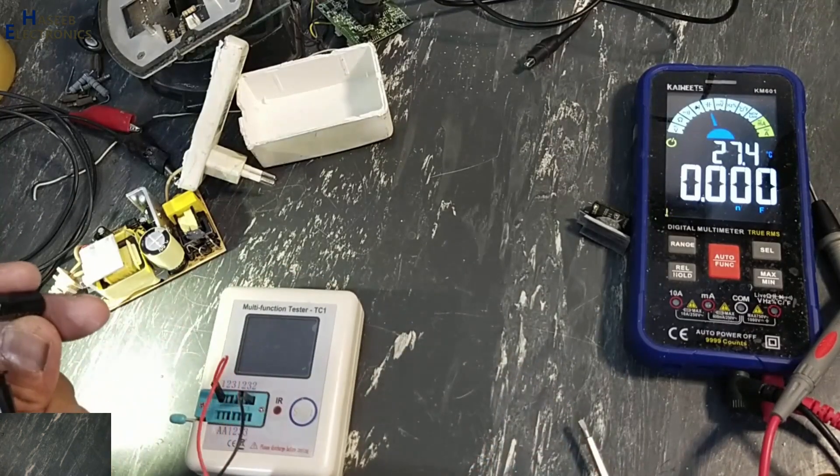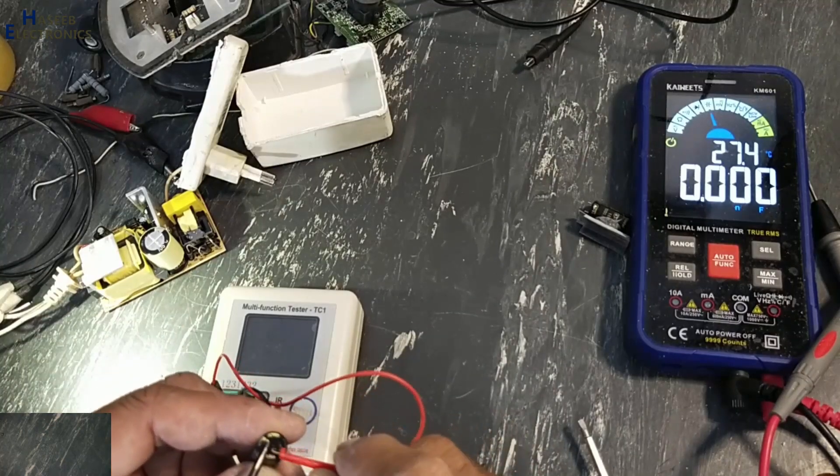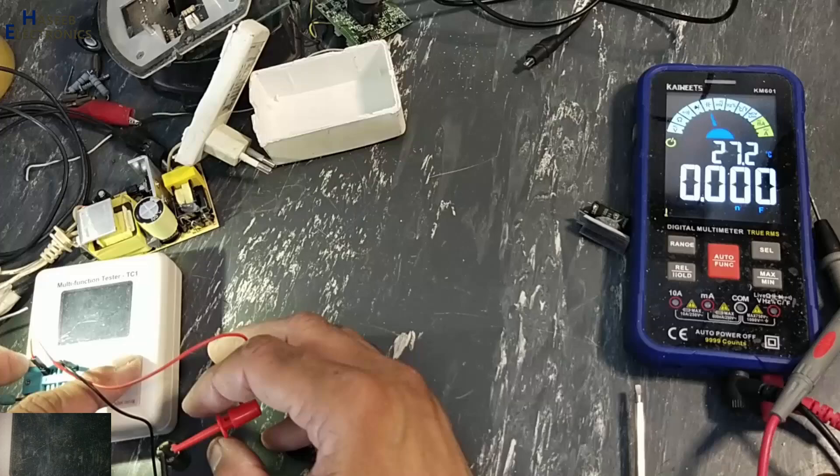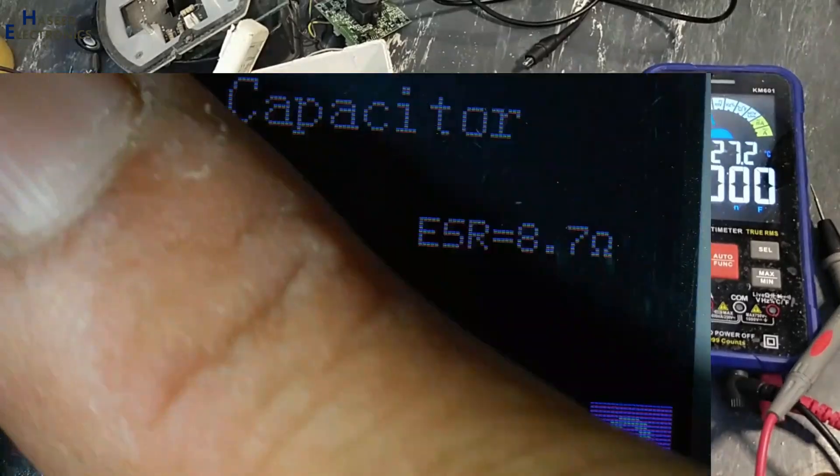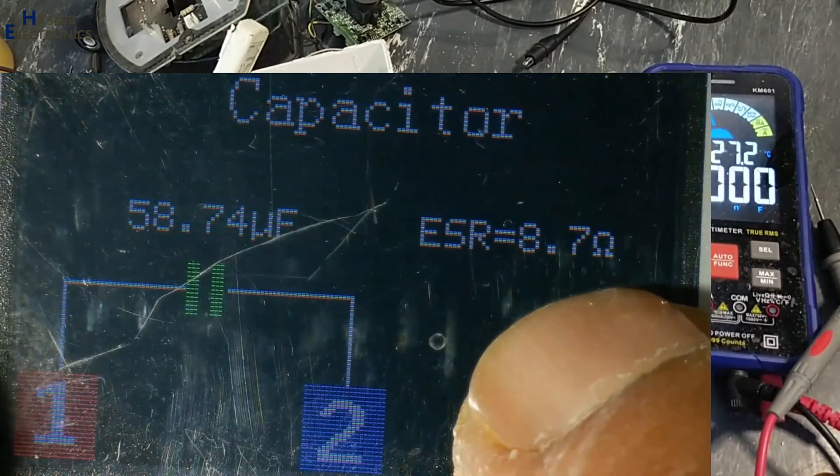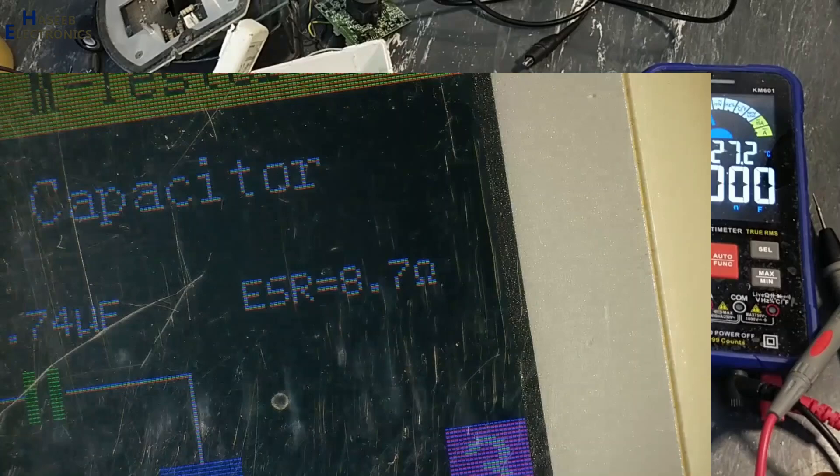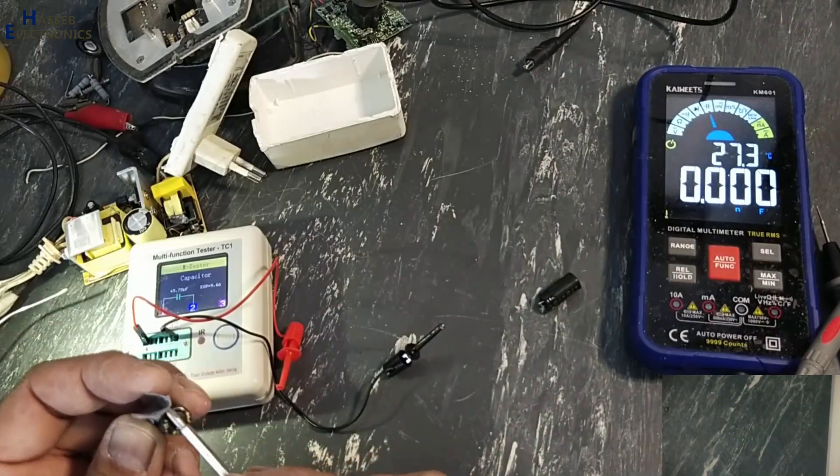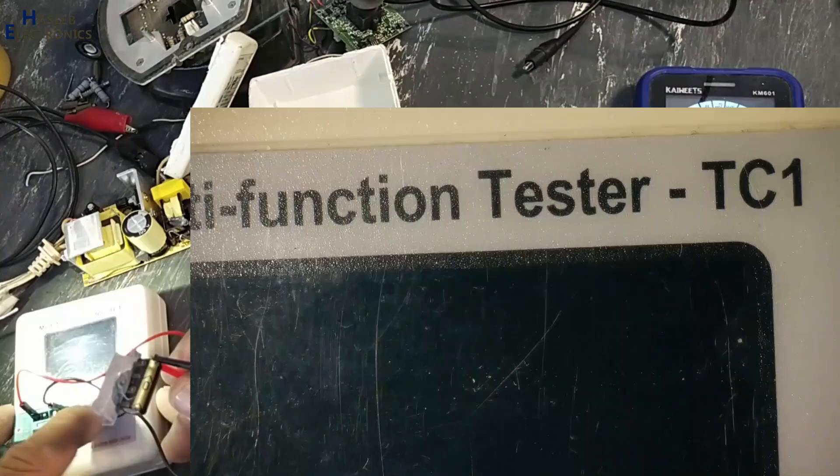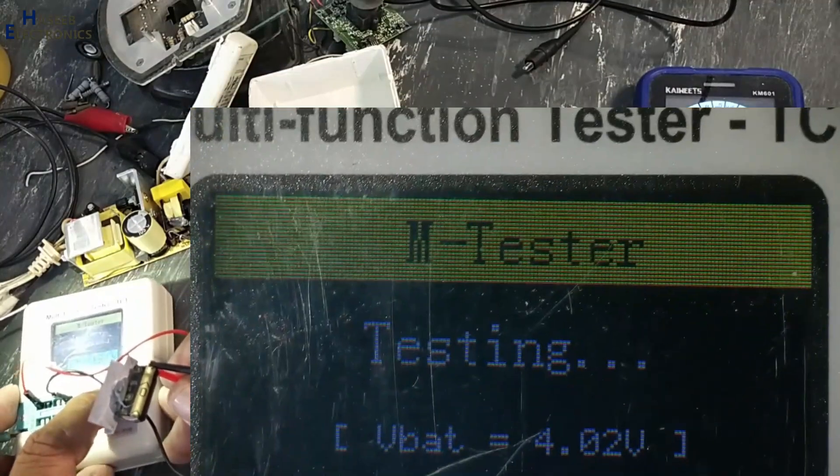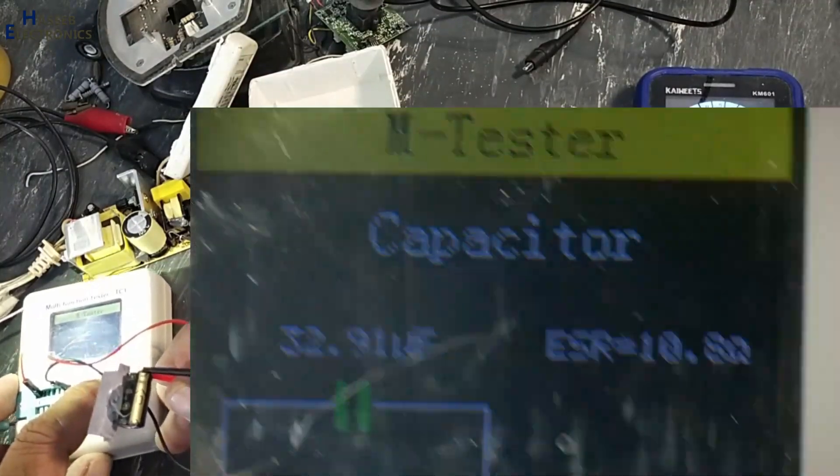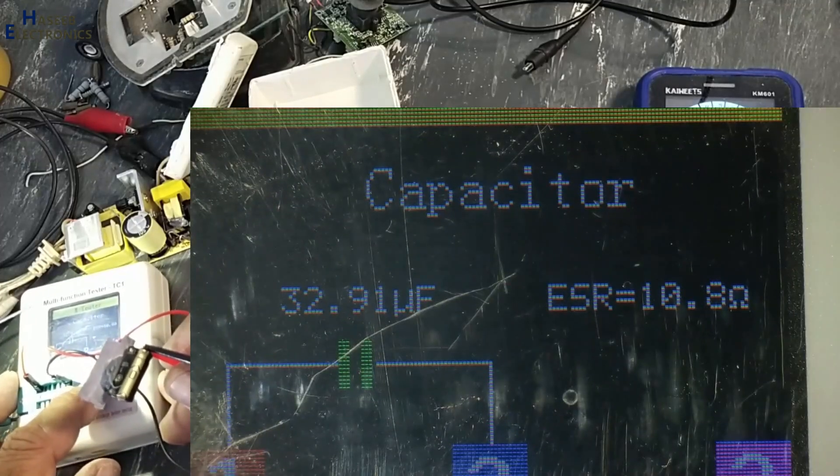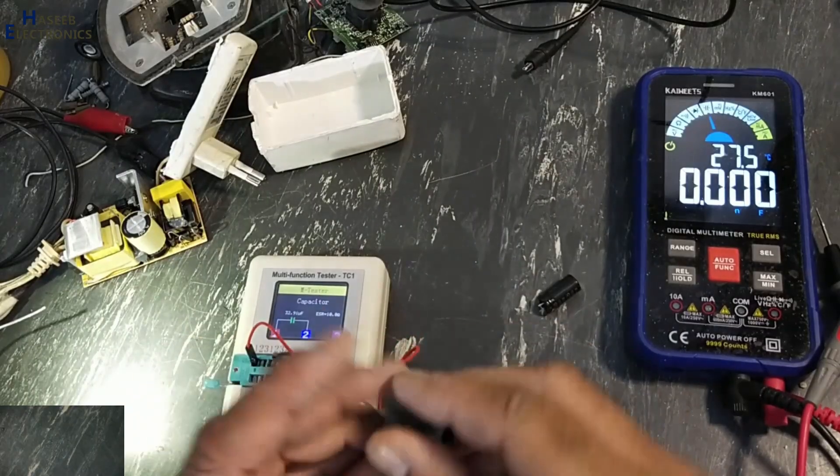If I will check with this ESR meter - 8.7 ohms ESR. This capacitor is not good. 32 microfarad, 10 ohms. This capacitor is also damaged.